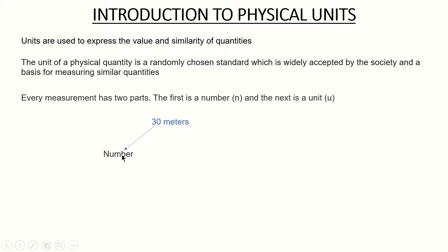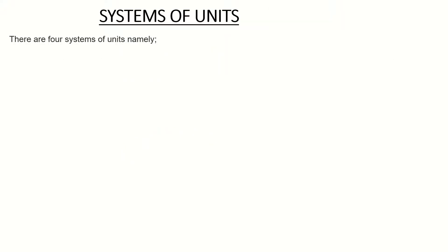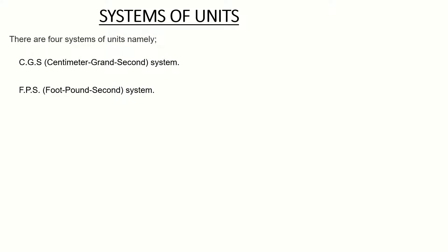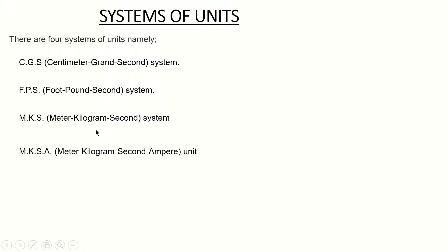For example, 30 is the number and meters is the unit, so every measurement has two parts: the number and the unit. Now we have some systems of units. Number one is the CGS, which is the centimeter-gram-second system. We have the FPS, which is the foot-pound-second system. We have the MKS, which is the meter-kilogram-second system.